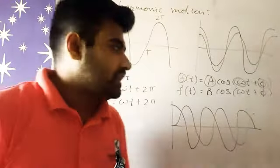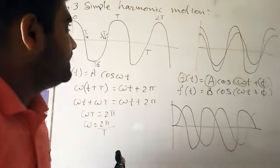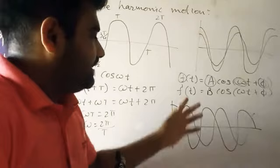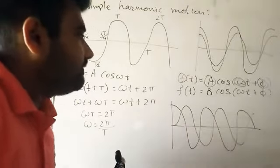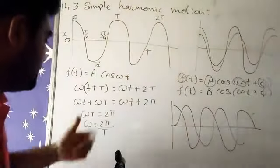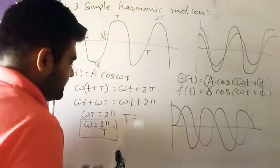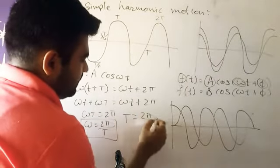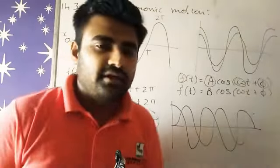That is the simple harmonic motion. Each and every graph we can derive it with different equations. We know this omega formula, and by subject T we get T = 2π/ω. So that is the fixed value of T. Thank you so much guys.